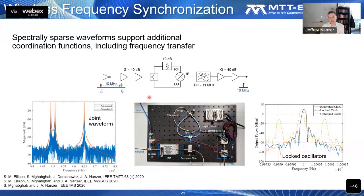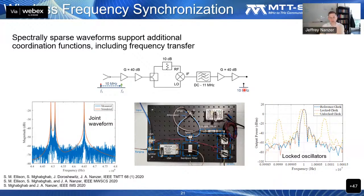The approach we used for wireless frequency locking builds on the spectrally sparse waveform. We take two tones separated by the frequency reference we're looking for—in this case 10 MHz. One node has a self-mixing circuit: the received two-tone signal is amplified, split into two arms, and mixed against itself in a mixer. The intermediate frequency output contains the 10 MHz reference frequency plus higher-order harmonics, which are filtered off to yield a clean 10 MHz reference. This can then be directed to a phase-locked loop to lock the oscillators—for our Ettus USRP software-defined radios, this simply goes to the reference input.